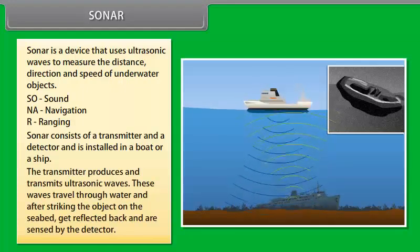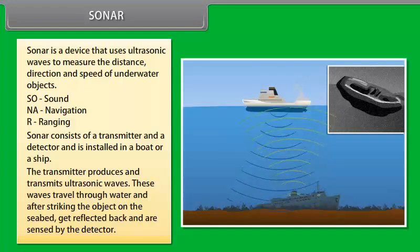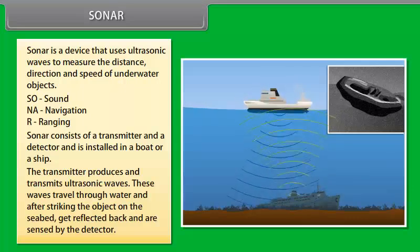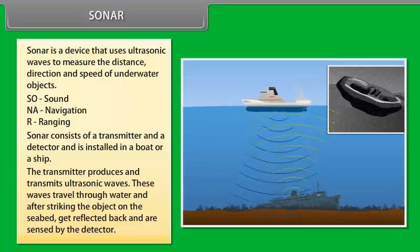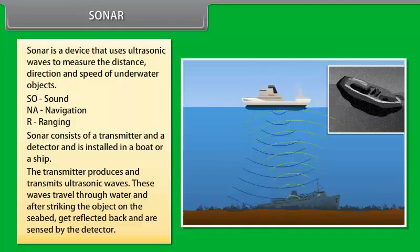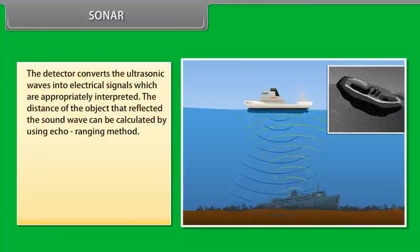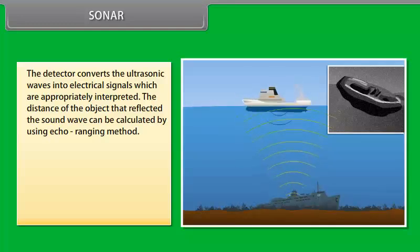Ultrasound is used for echocardiography. In this, the ultrasonic waves are made to reflect from various parts of the heart and form the image of the heart. Ultrasound is also used to break small stones formed in the kidneys into fine grains. These grains later get flushed out with urine.